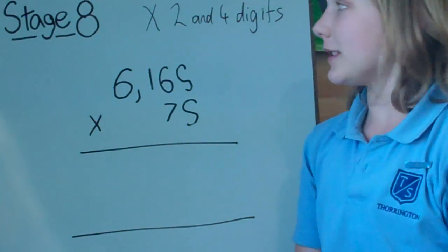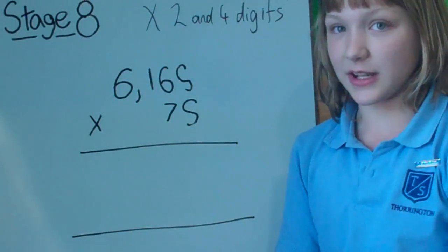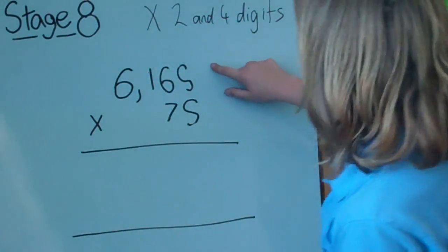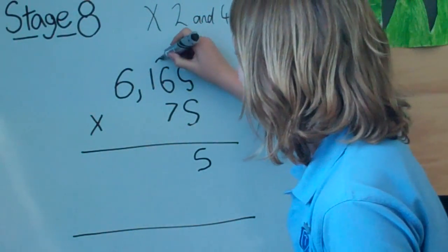Multiplying 2 and 4 digit numbers, our question is 6,165 times 75. What you do is go 5 times 5 equals 25, put the 5 down here and carry the 2.